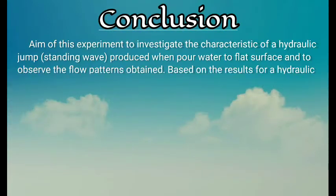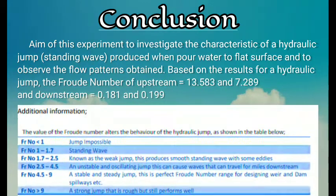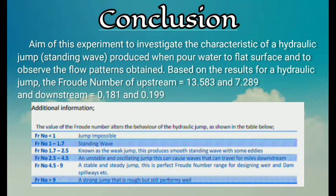Conclusion! The aim of this experiment was to investigate the characteristics of a hydraulic jump standing wave produced when pouring water onto a flat surface and to observe the flow pattern. Based on the results, the Froude numbers for upstream and downstream are 13.583 to 7.289 and 0.181 to 0.199 respectively. Therefore, when the Froude number is 7.289, it is a stable and steady jump — a perfect Froude number range for designing weirs and spillways. When the Froude number is 13.583, it is a strong jump that is rough but still performs well. For downstream, the jump is impossible since the Froude number is lower than one. That's all, thank you!